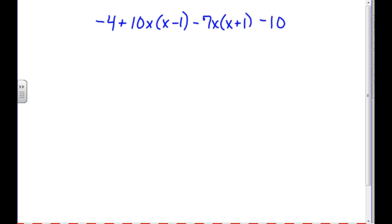So the only thing that's going to happen in this next step is the distributive property, and we're going to multiply this positive 10x times that x, and by that negative 1. And we're going to multiply this, yes, this negative 7x times that x, and by that 1, just to get rid of all the parentheses.